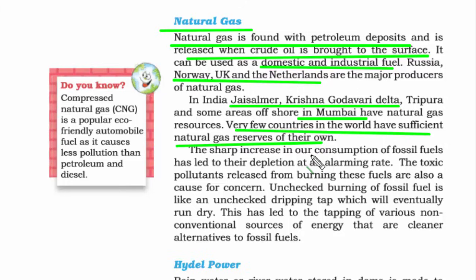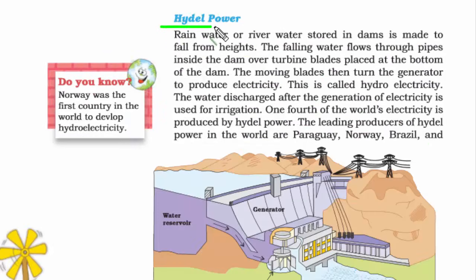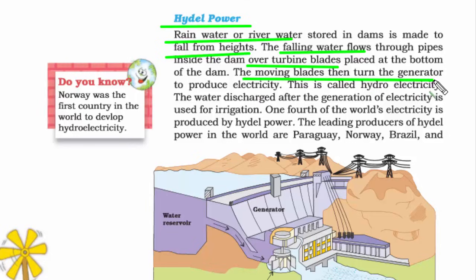When we consume a lot of fossil fuel, there is a huge side effect — burning fossil fuel leads to burning of carbon, and when carbon content increases in the atmosphere it creates huge concern. Therefore we constantly look for non-conventional sources of energy that are cleaner. Hydropower is power produced out of water. Rainwater and river water are stored in a dam, fall from height, and when they fall over turbine blades the blades move, turning a generator to produce electricity — this is called hydroelectricity.